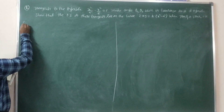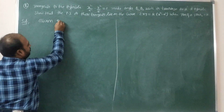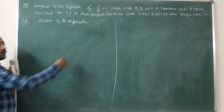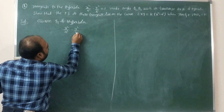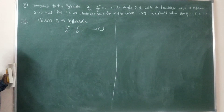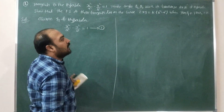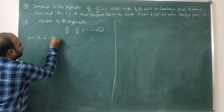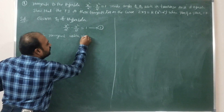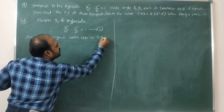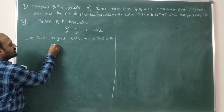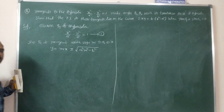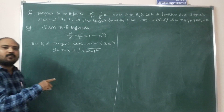Given equation of hyperbola: x²/a² - y²/b² = 1. Since we are discussing angles and tangents, the equation of tangent with slope m to equation 1 is y = mx ± √(a²m² - b²). This is the formula for the equation of tangent to a hyperbola with slope m.